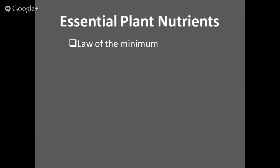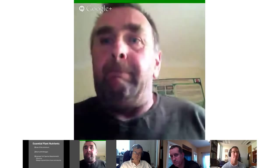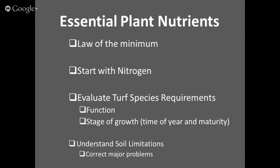Generally, fertilization of turf grasses starts with nitrogen. Nitrogen is required in the highest quantities and is responsible for shoot growth and root growth. The timing and source of that nitrogen application is going to dictate a lot of whether or not a fertilizer program is successful. It's also important to evaluate the turf species requirements with respect to nitrogen and other nutrients, and to understand soil limitations — both physical and chemical properties — as these will influence granular applications as well as topical or foliar applications.